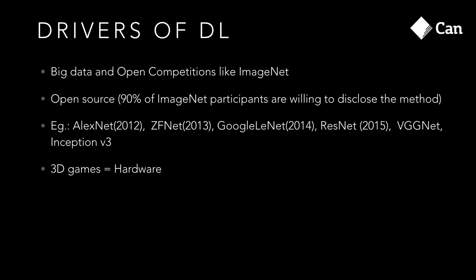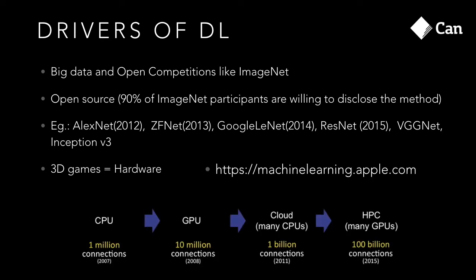These are examples of machines doing special tasks well — not general intelligence, still very specialized. What are the drivers of deep learning? Open competitions and open source — today's talk showed that 90% of ImageNet challenge participants are open source and willing to disclose their methods. Also, 3D games — the more demand for 3D games, the more powerful GPUs become, and that drives deep learning too. Even Apple now follows the open source model — they have a blog where this very secretive company now shares their machine learning insights.